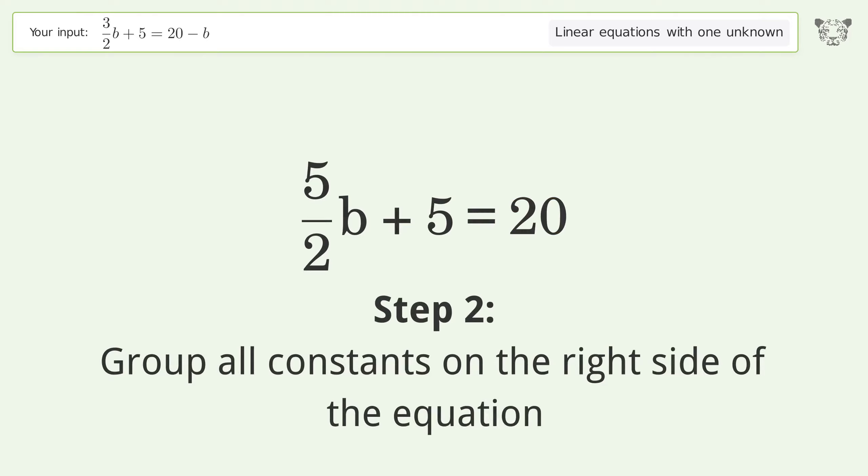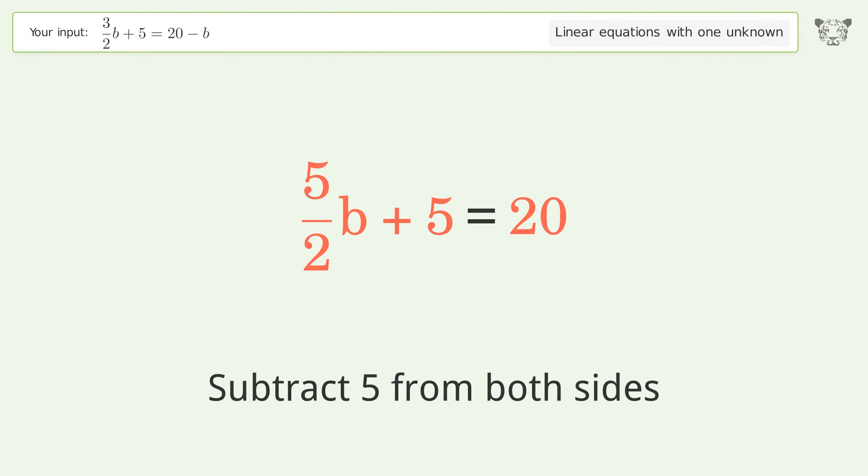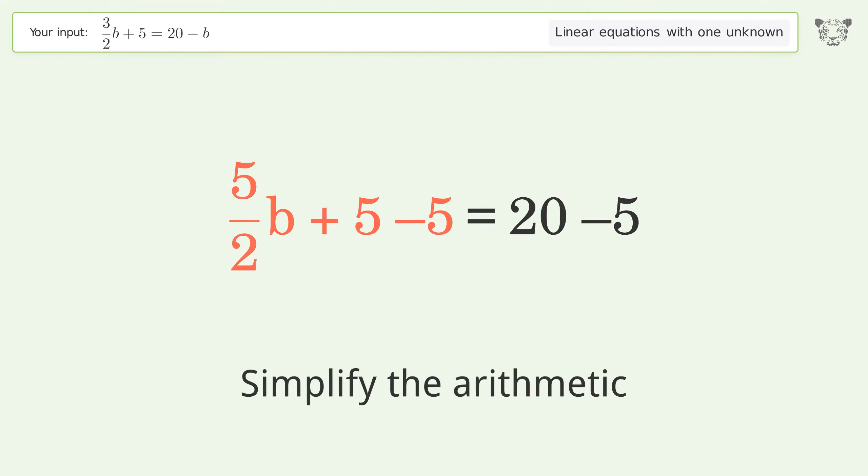Group all constants on the right side of the equation. Subtract 5 from both sides. Simplify the arithmetic.